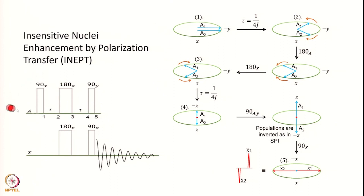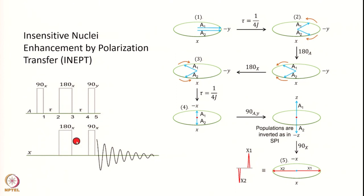The experiment starts like this: you have the A spin and the X spin. The X spin is the less sensitive one and the A spin is the more sensitive nucleus. We apply a hard pulse to A — hard pulse means it is not selective, all the transitions of A spin are excited. We apply a 90X pulse to the A spin, wait for a period tau, and then apply simultaneously 180-degree pulses to both the A spin and the X spin. This is particularly easy if the A spin is a proton and X spin is carbon, because these are two different channels and applying pulses on two different channels is not a problem at all.